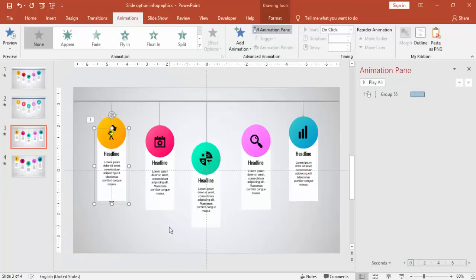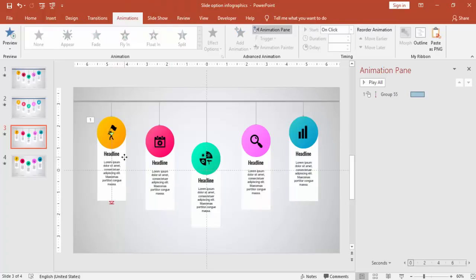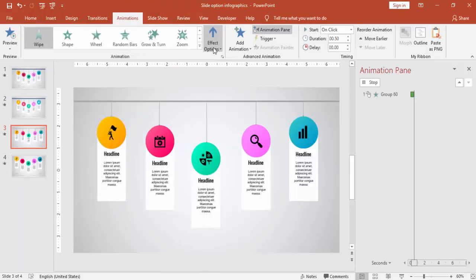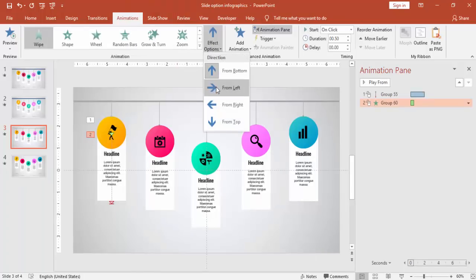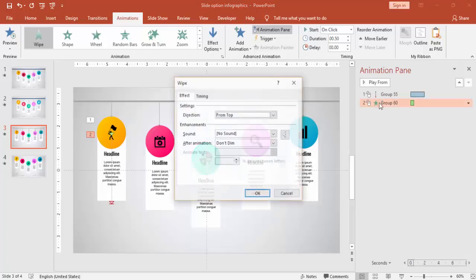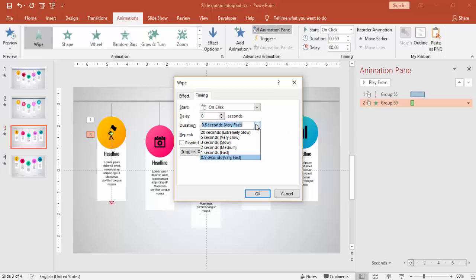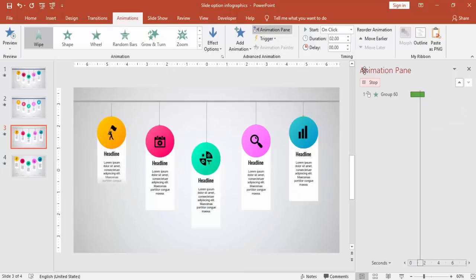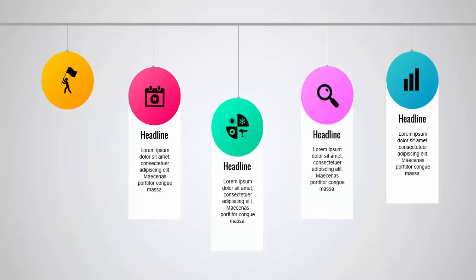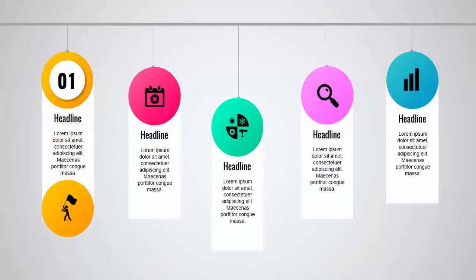The second animation is for the text rectangle. For that I'm going to use Wipe and make it come from the top. Set the timing to Medium and set it to Start With Previous. Now if I preview the slide show, this looks okay.